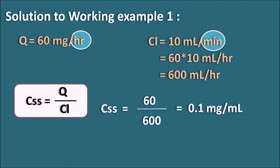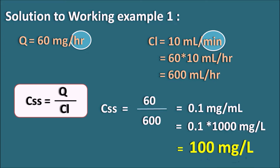The units are mg per ml. We can convert ml into liters by multiplying by 1000: 0.1 × 1000 = 100 mg per liter. So the steady state concentration achieved by this drug is 100 mg per liter.